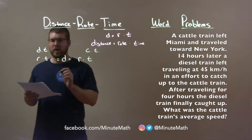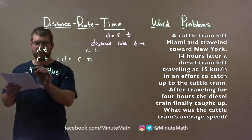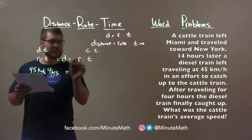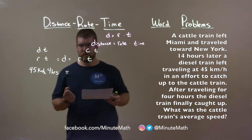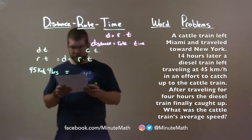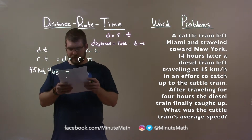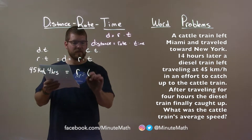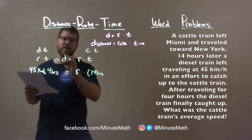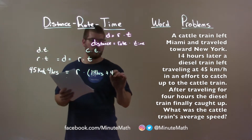So the diesel train traveled for a total of four hours at 45 kilometers per hour, and it traveled the same distance as the cattle train did to catch up to it. It only took four hours going at 45 miles an hour to cover that same distance. Now the cattle train — its rate we don't know, but its time: it was traveling 14 hours before the diesel train left, and then four hours later is when they finally met. So its total time traveling was 14 hours plus four hours.